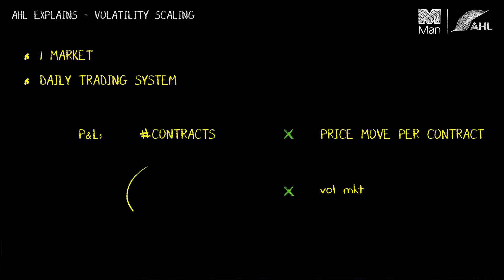I now need to work out the number of contracts I'm going to hold. The first term is an overall gearing number related to the size of the fund and its volatility target, but it doesn't change from day to day — it's just a fixed constant. Because we're trading momentum, I need to include the momentum signal, capital M with subscript T, denoting today's momentum value — the output from running the trading system. This number is sometimes positive, sometimes negative, corresponding to being long or short in the market.